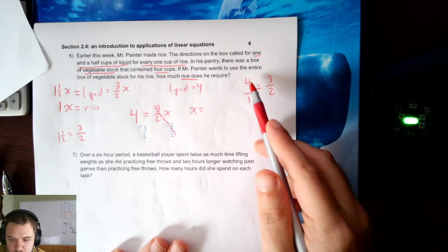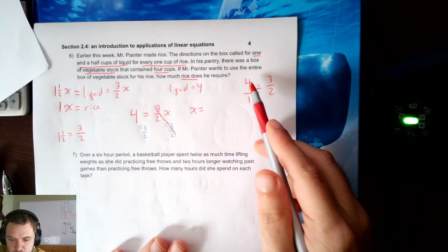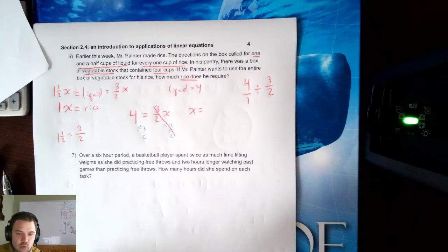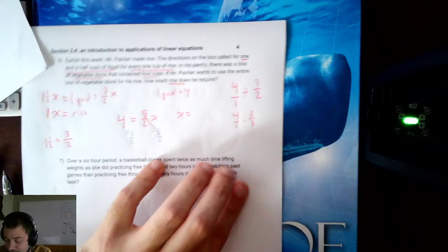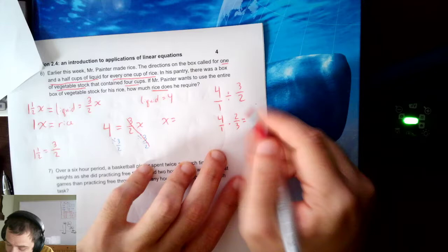We had just written 4 over 1 divided by 3 halves. We wanted to do 4 divided by 3 halves. I'm going to use KFC, keep flip change, to do 4 over 1 times 2 over 3. I do keep flip change, 4 times 2 is 8, 1 times 3 is 3, so I get 8 thirds.